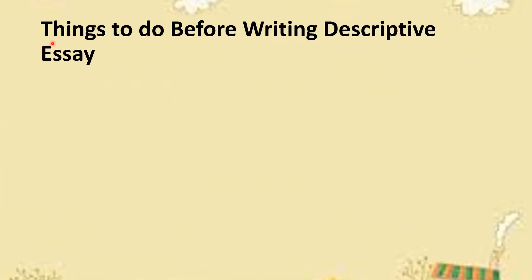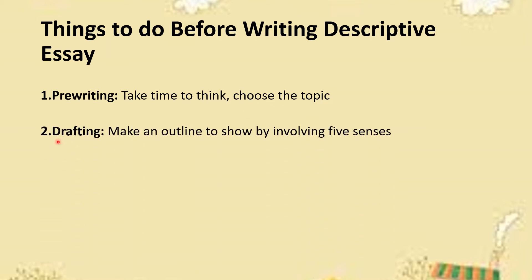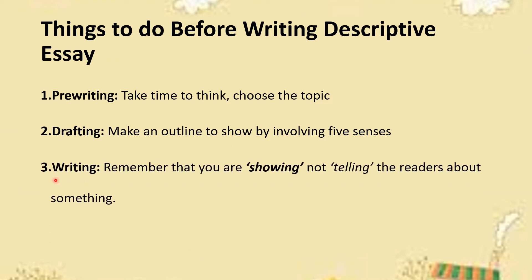Let's look at the things that should be done before writing a descriptive essay. Firstly, you must do pre-writing — take time to think, choose, and plan about your topic. The second step is to make a draft and outline, involving the five senses. The third thing is to plan your writing — remember that you are showing, not telling, the readers about something. If you are telling about something, your essay is no longer descriptive; it becomes narrative. You have to show something in front of the reader to make your essay descriptive.